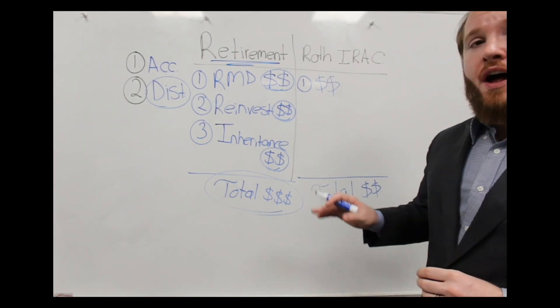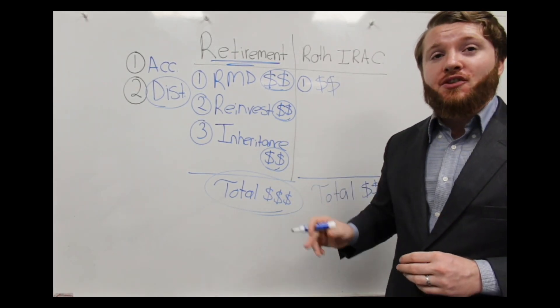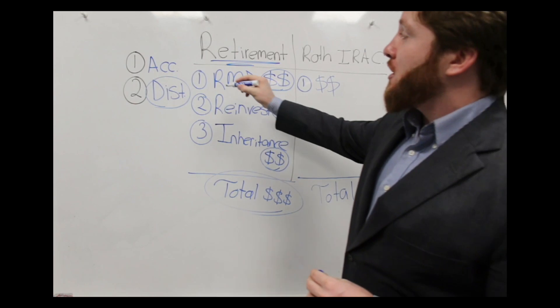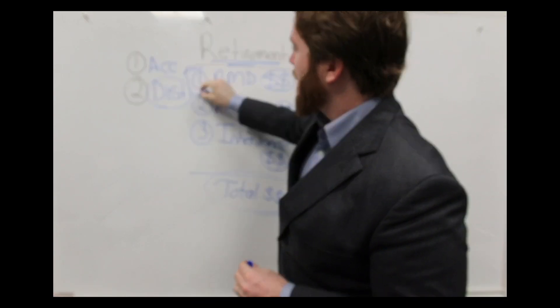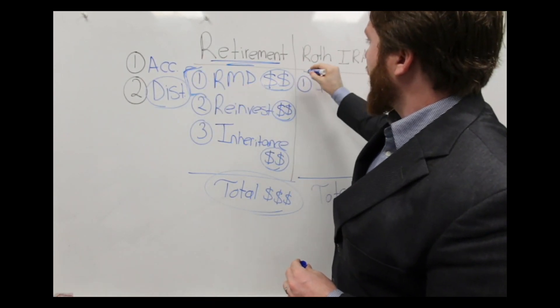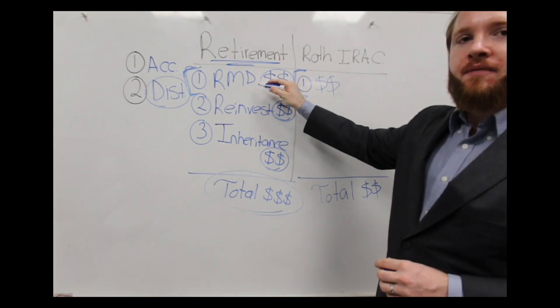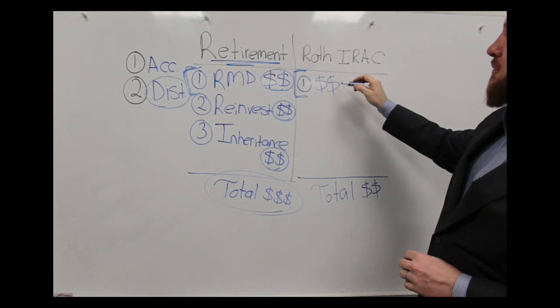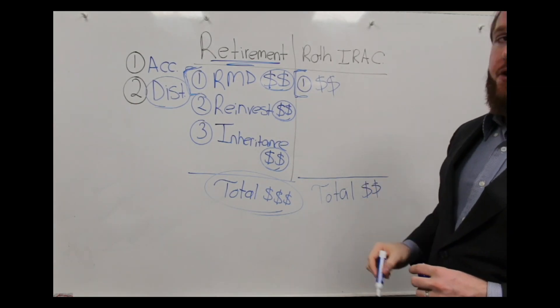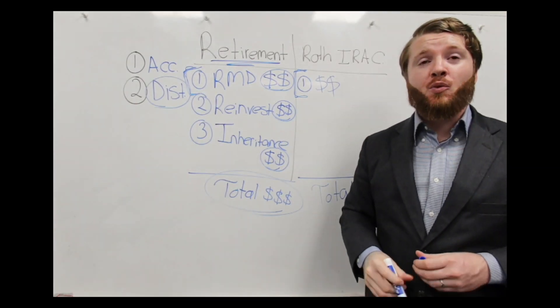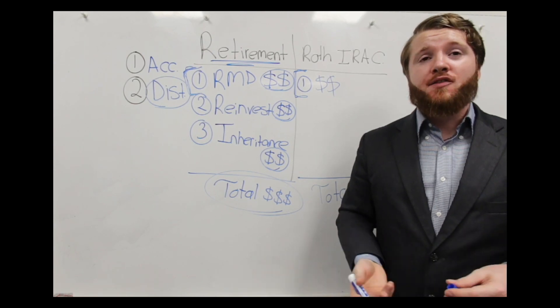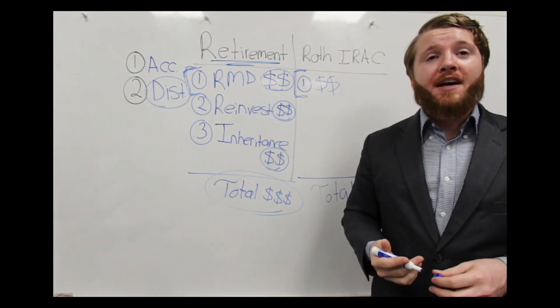The reason why advisors will tell you not to do this is because they only look at RMDs and what it will cost you. They'll say, hey, you're going to pay this much. Doing a Roth IRA conversion will cost you this much. And it's a wash. It doesn't make sense. By the time you break even, you'll be 95.